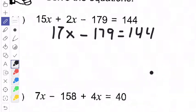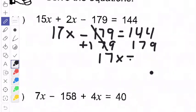So if I'm subtracting 179 we know to do the inverse operation which means to add 179. So we're going to add 179 to both sides of the equation. These cancel out. So I get 17x equals 323. Sorry.